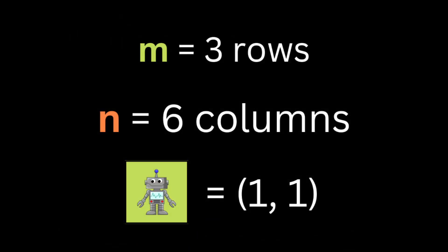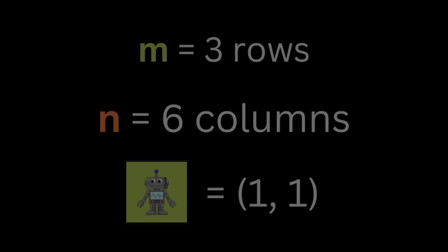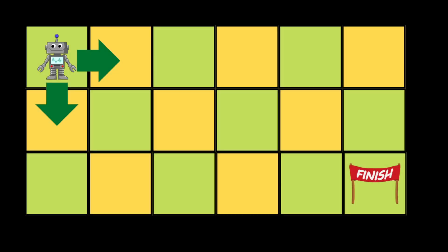The robot is located at the top-left corner, at position (1,1) of the m×n grid. Starting from there, how many unique paths do we need to reach any square to the right? Just one move. How many unique paths to reach any square below? Also one move. So we're going to create a DP matrix, starting at the first square with value 1 for the first column and first row.